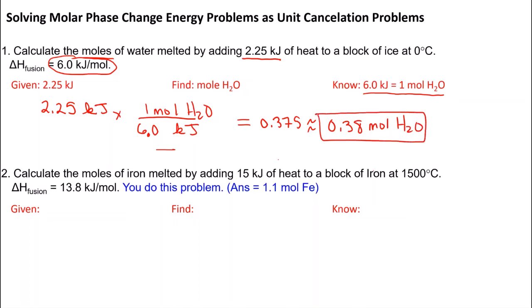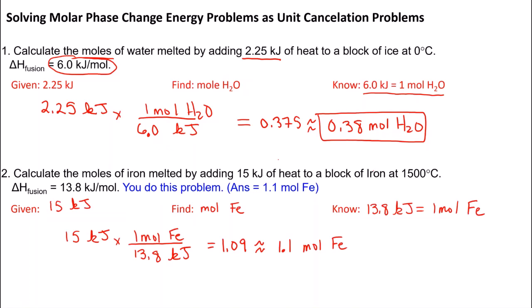You are going to try the next one. Calculate the moles of iron melted by adding 15 kilojoules of heat to a block of iron at 1500 degrees Celsius, its melting point. You're given that delta H is 13.8 kilojoules per mole. Identify your given, your find, what you know, and then use unit cancellation. Pause the video and proceed. Hopefully you set up the problem correctly. If you didn't get the correct answer, pause and copy the work before we go on to the next problem.